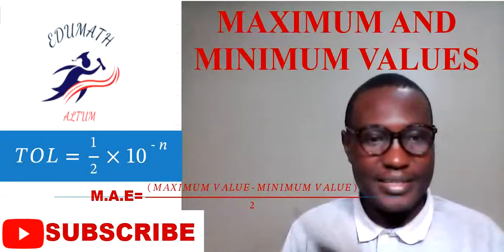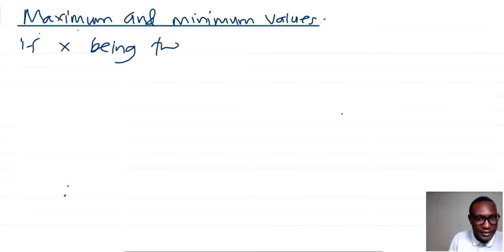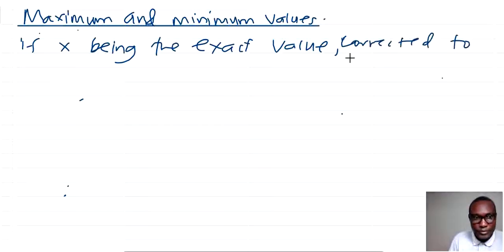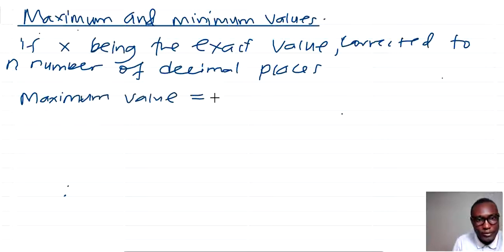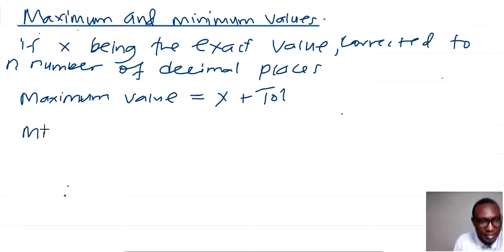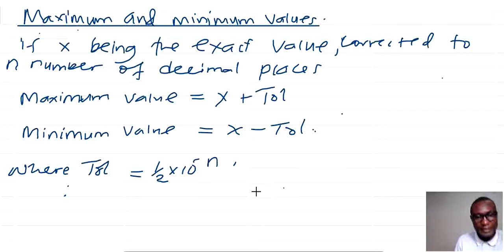From our previous video, we saw that if we have x being the exact value corrected to any number of decimal places, then the maximum value is equal to the exact value x plus the tolerance, and the minimum value is equal to x minus the tolerance, where the tolerance is equal to a half times 10 to the power negative n.